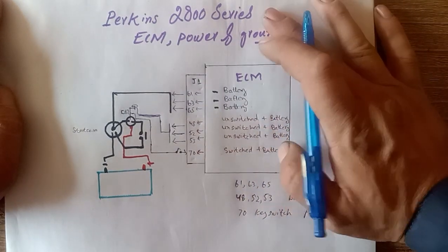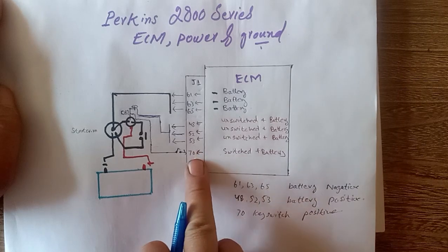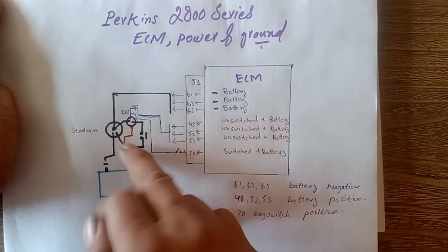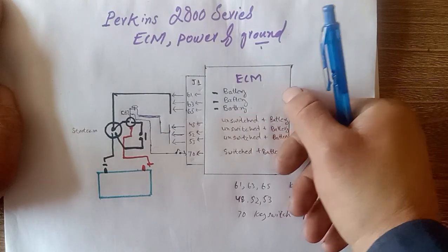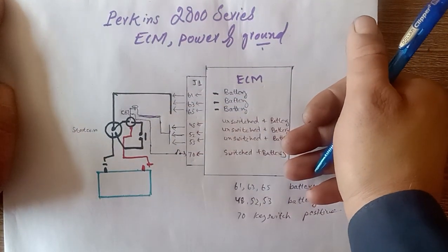And finally, pin 70 is switched battery positive. This means this is your key switch. If you want to turn it on, this goes to turning on. If you want to turn it off, this goes to turning off.